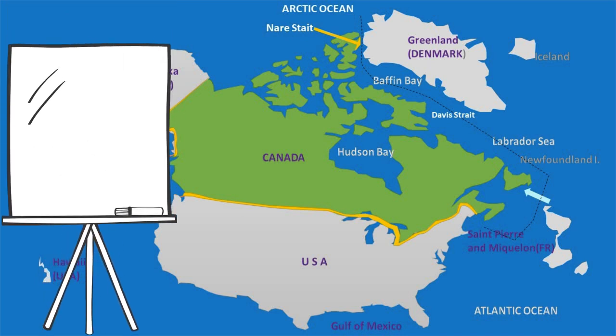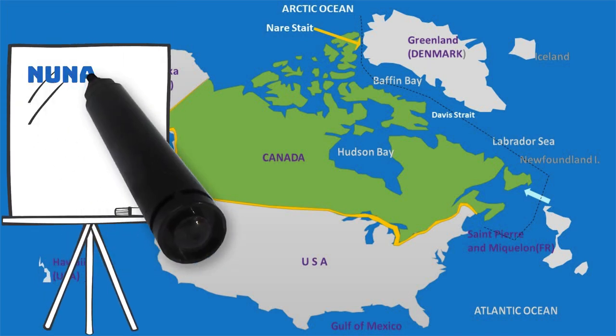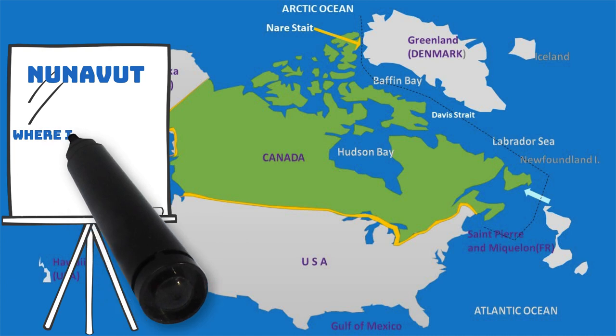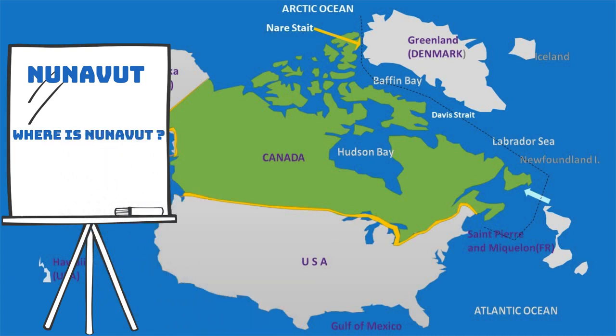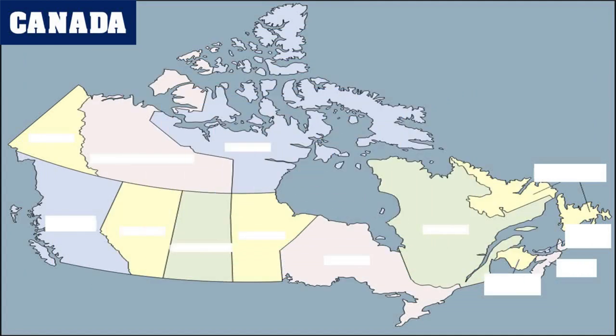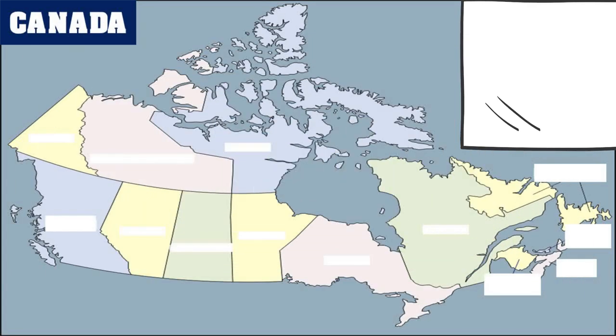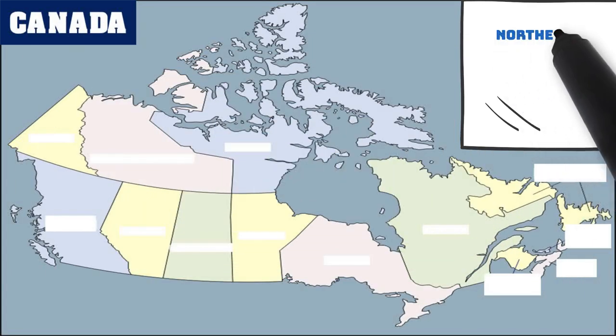In this video we are learning about the Nunavut territory. Here is a map of Canada — where is Nunavut located? It covers the northern and northeastern part of Canada.